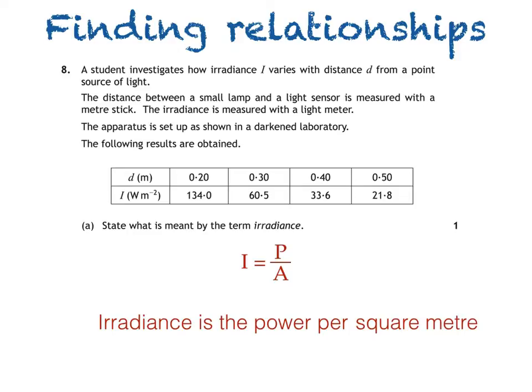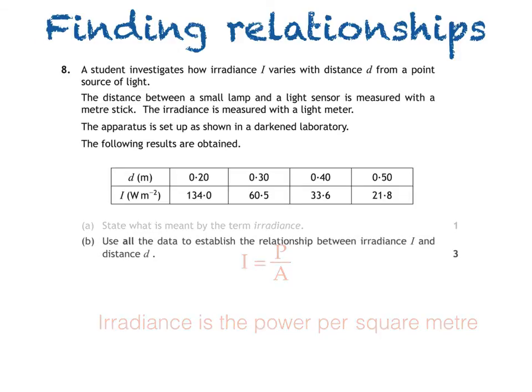Part B asks us to use all the data to establish the relationship between irradiance I and distance d. The important thing in this question is that we actually know the relationship, and again it's to be found in the relationship sheet. I is equal to k divided by d squared. So irradiance is equal to a constant divided by distance squared.